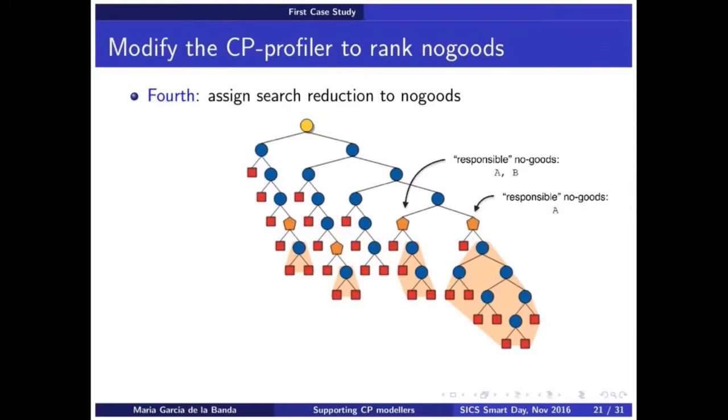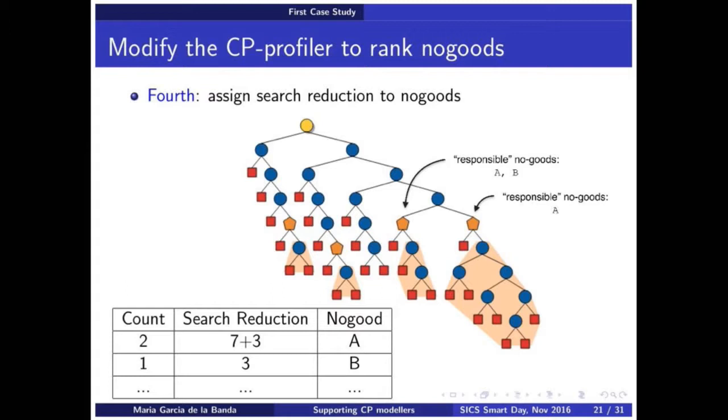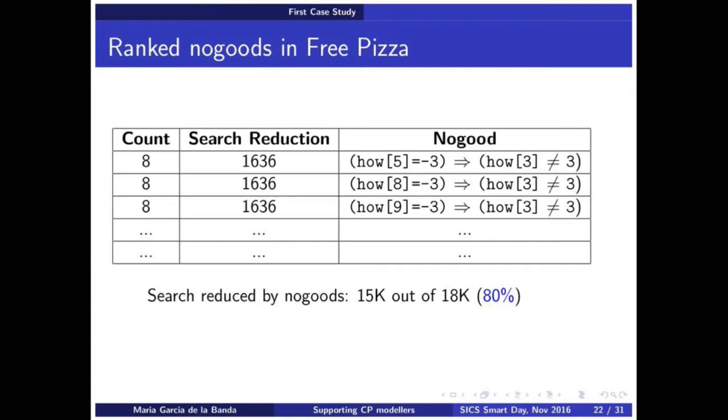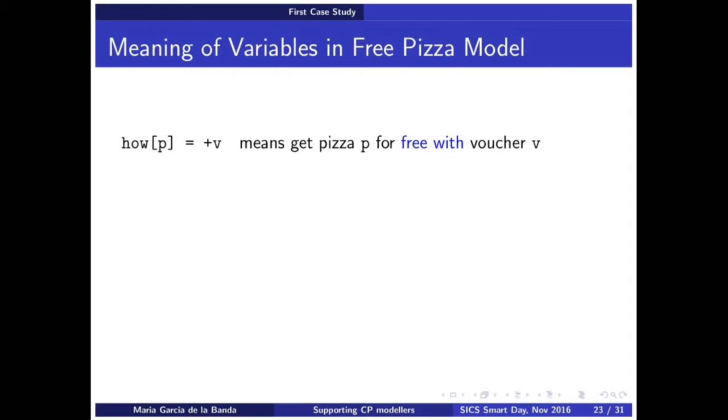The fourth thing that we did is, let's rank those no goods. Remember that every single failure node can generate a no good. So I might have thousands upon thousands of them. Which ones are the ones that are any good? I want to rank them. So we did. So what we did was, for every no good, I tell, this no good, A, is responsible for this cut. A and B are both responsible for this failure. And I collected all this information. And I collected it, and we said, okay, wonderful, A has 7 plus 3, B has 3. And I rank them by the amount of search that they eliminate. And we did that for the pizza problem. And these are the top no goods, some of the top no goods. And the search reduction was huge. And when we studied those no goods, we found amazing things.